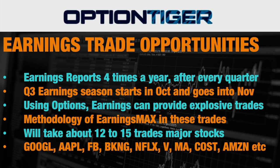We are going to be applying these principles in all our earnings trades happening in October and November of 2019. In total, we'll take about 12 to 15 trades in major stocks. You don't want to do this for every stock — it doesn't make sense. You want to focus on stocks that make big moves. We'll look at their historical performance and various parameters to determine the best candidates. These are generally high-liquidity, high-flying stocks like Google, Apple, and Facebook, where we can analyze historic patterns, volatility expansion, and contraction features.